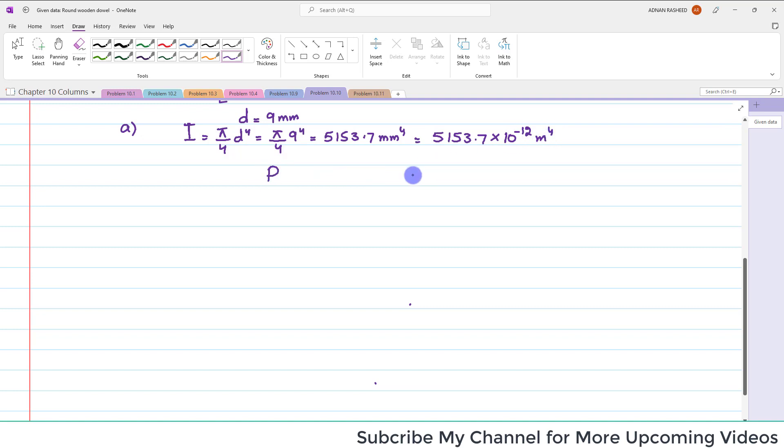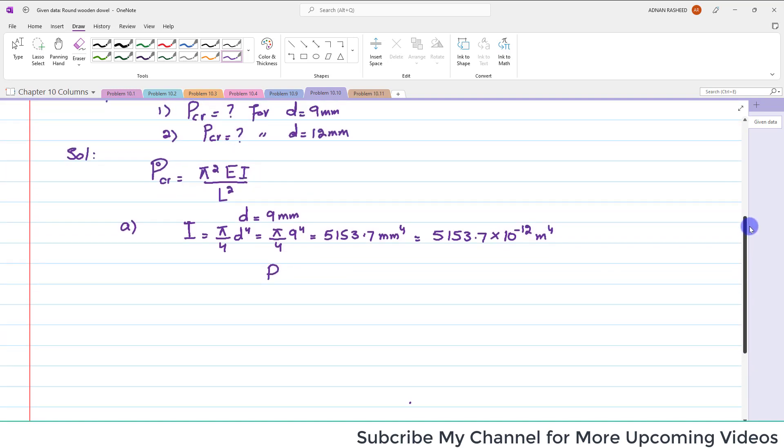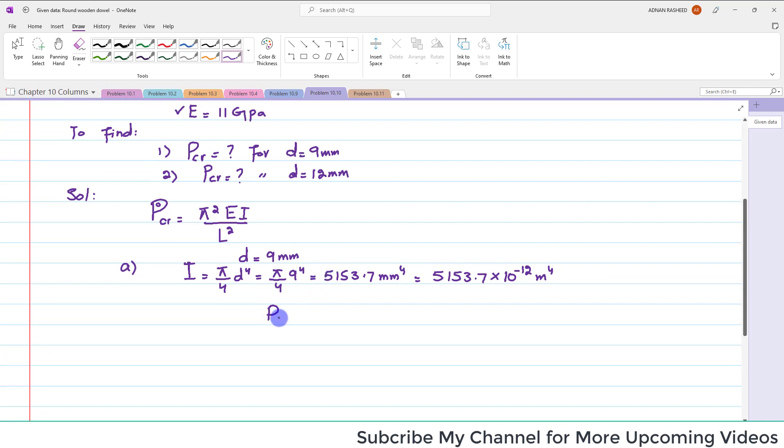Now you have all the values. You can put it. P critical is equal to pi squared. You have the value of E which is 11 gigapascals, so 11 times 10 to the power 9, and I is equal to 5153.7 times 10 to the power minus 12 divided by L squared which is 1.2 whole squared.